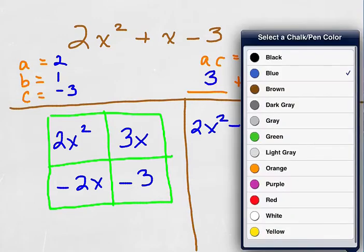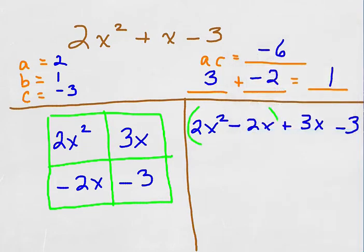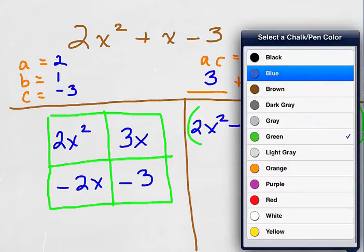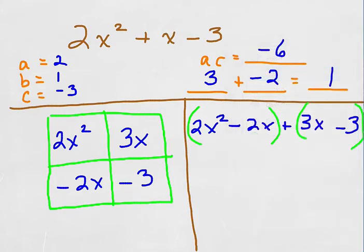So let's go ahead and do some grouping on this method and then we can continue. We'll look at this first group, which is 2x squared minus 2x, and we're going to factor out the GCF of the group, which then would leave x minus 1.